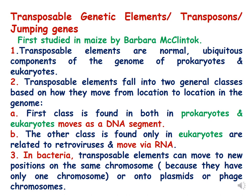Transposable elements are found in both prokaryotes and eukaryotes and they fall into general classes based on how they move from location to location. They can move by copy-paste or cut-paste mechanisms. When they move via RNA they are called retrotransposons. In bacteria, transposable elements are IS elements and transposons, and in eukaryotes there are many examples such as AC/DS elements in maize and retrotransposons.